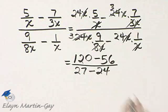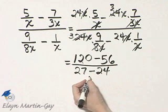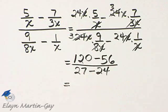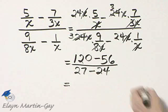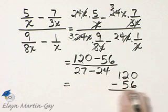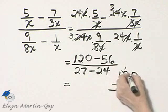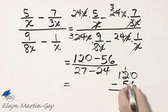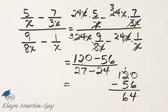Now notice how much more simplified this expression is. Let's go ahead and simplify further. 120 minus 56, let's see what that is. I'll borrow. 10 minus 6 is 4, 11 minus 5 is 6.